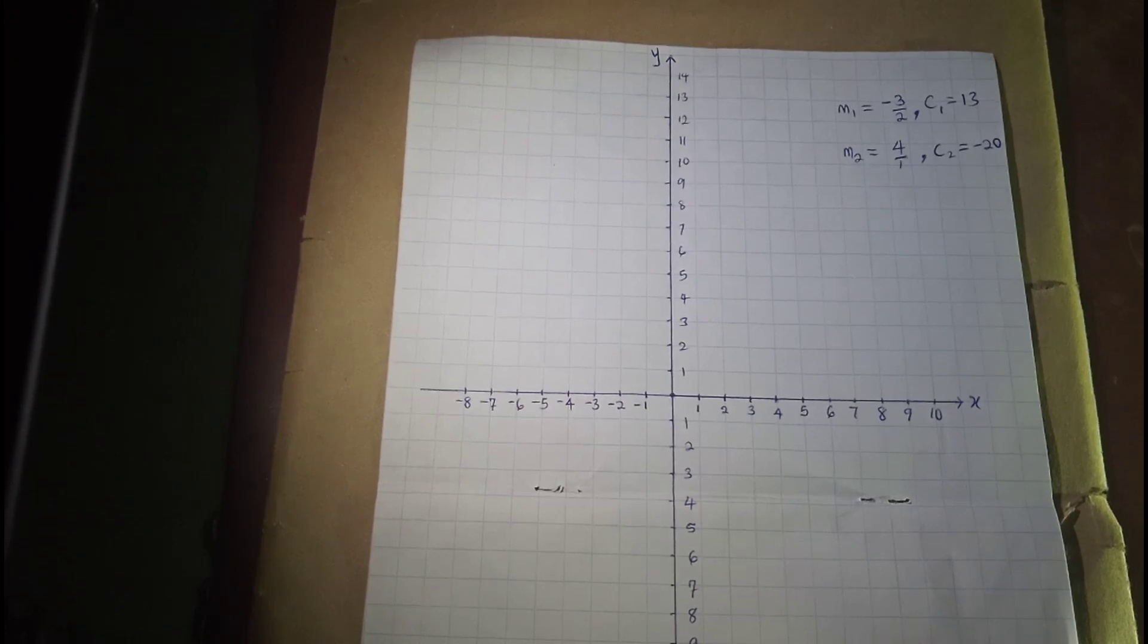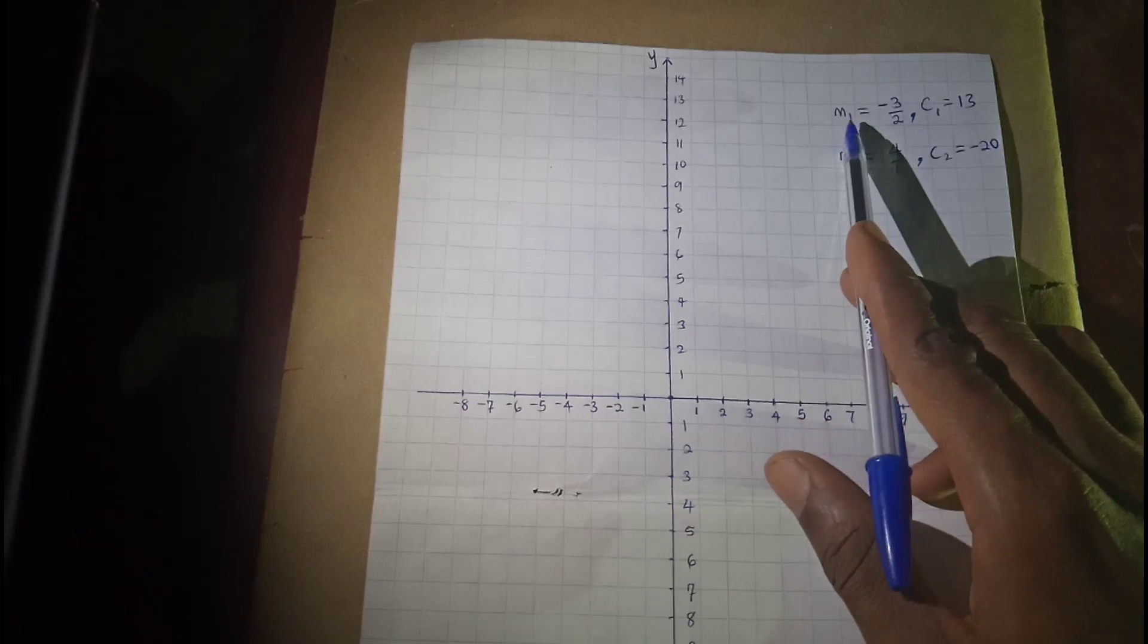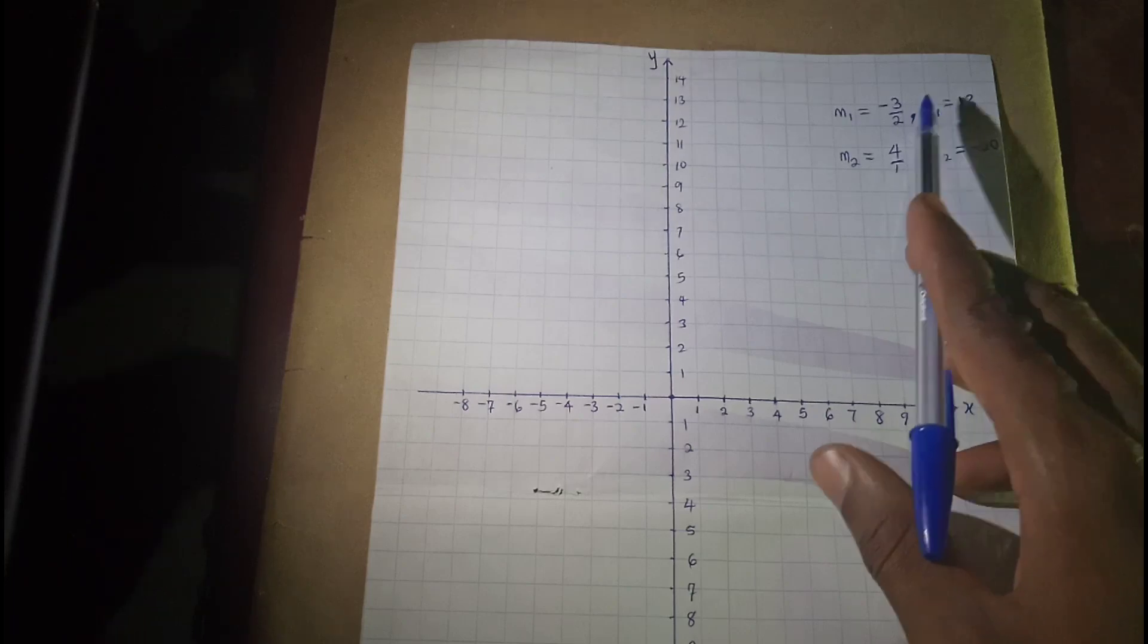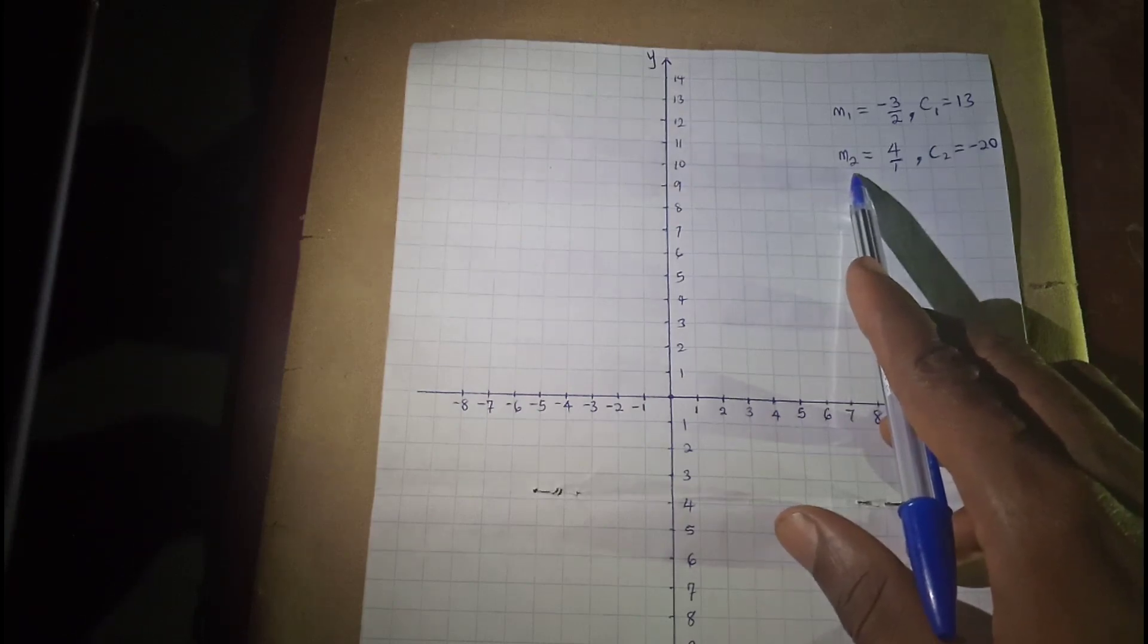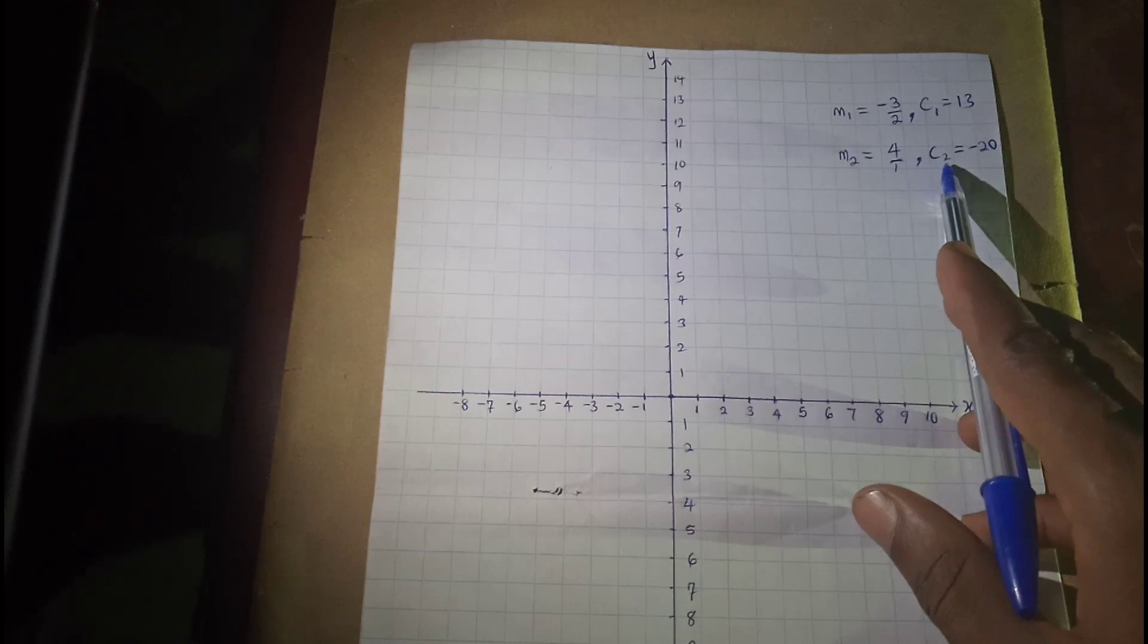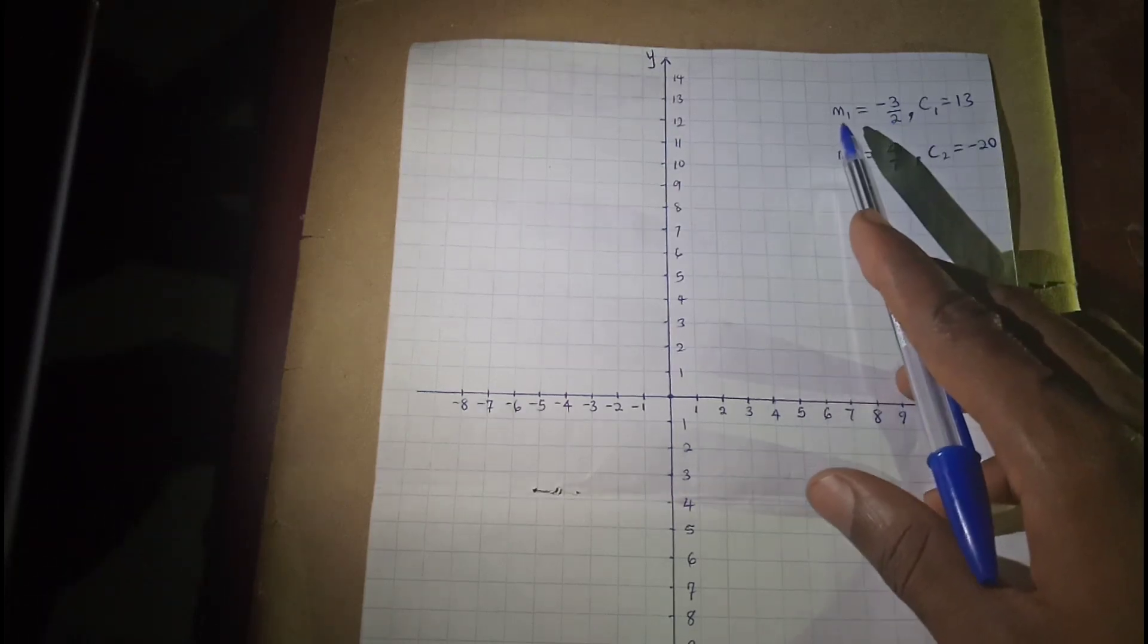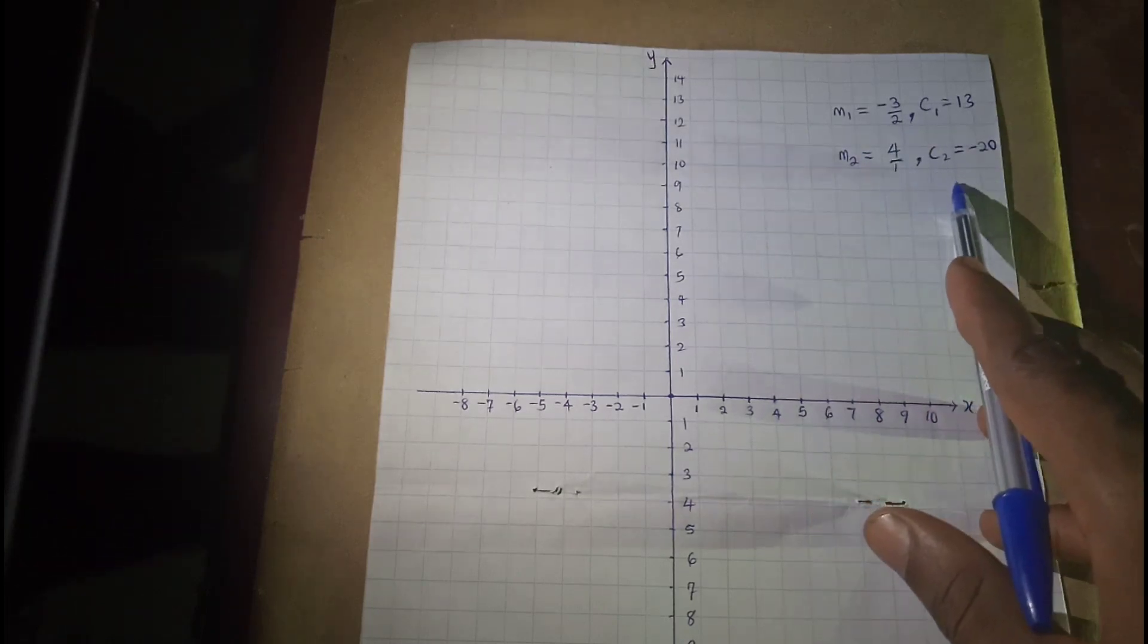Our graph sheet is now ready. We have m1, which is the slope of equation number 1, and we have c1, which is the y-intercept of equation number 1. And we have m2, which is the slope of equation number 2, and we have c2, which is the y-intercept of equation number 2. So let's construct a graph of equation number 1, then we later on construct the graph of equation number 2.